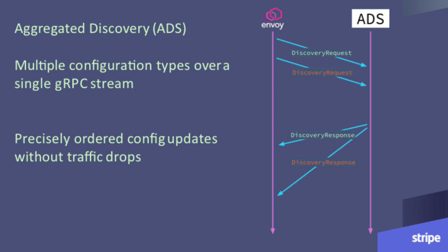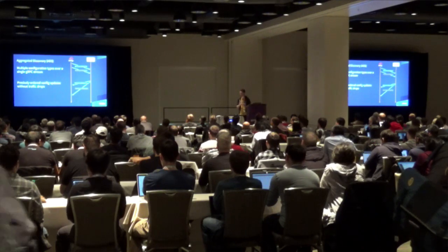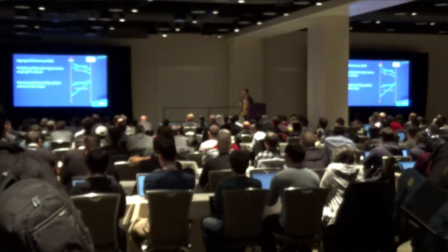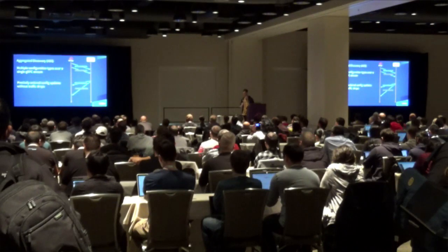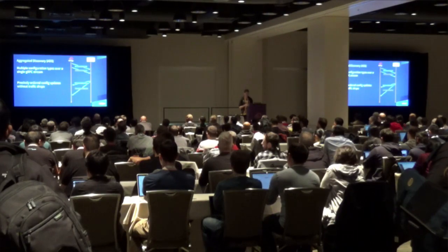Even better, there's a newer protocol that Envoy has recently implemented called the Aggregated Discovery Service (ADS). ADS allows you to multiplex multiple resource types over a single gRPC stream. Envoy will make multiple discovery requests for different kinds of resources, and the management server will respond with those resources in the precise order it wants. This means you can guarantee more precisely-ordered traffic updates because Envoy will only ever subscribe to a single ADS stream at a given time.